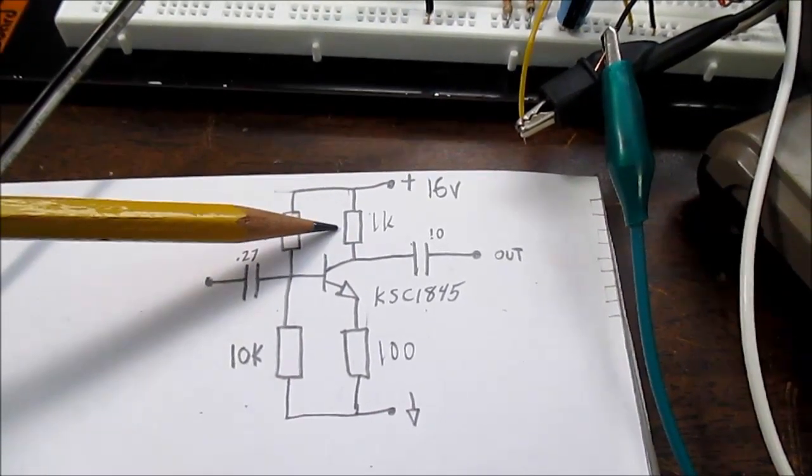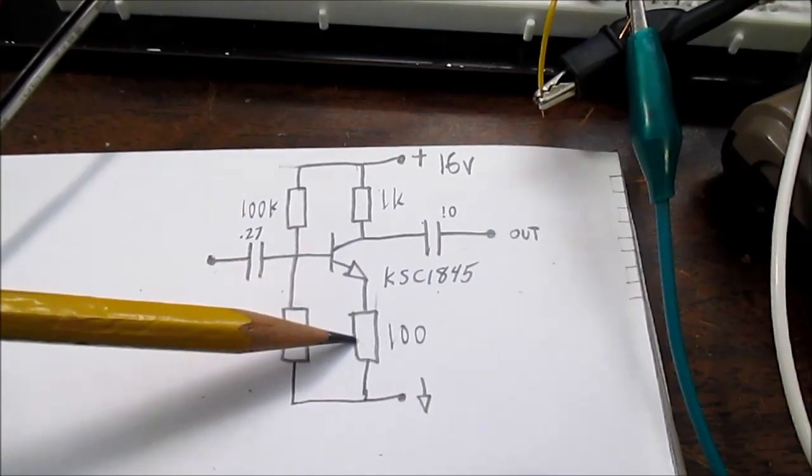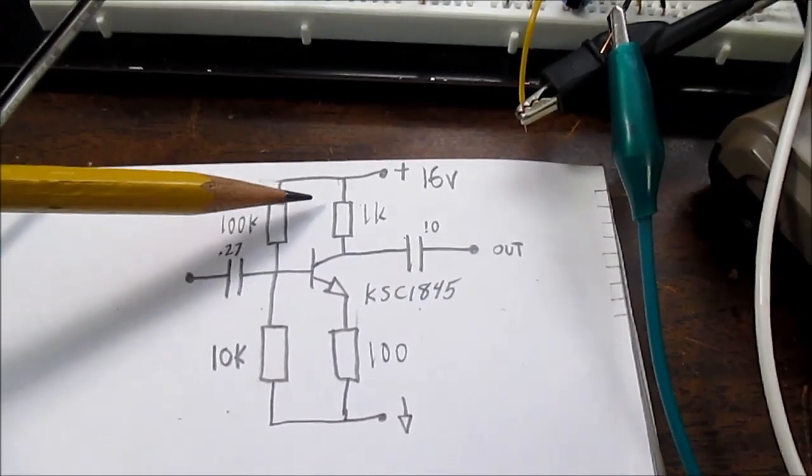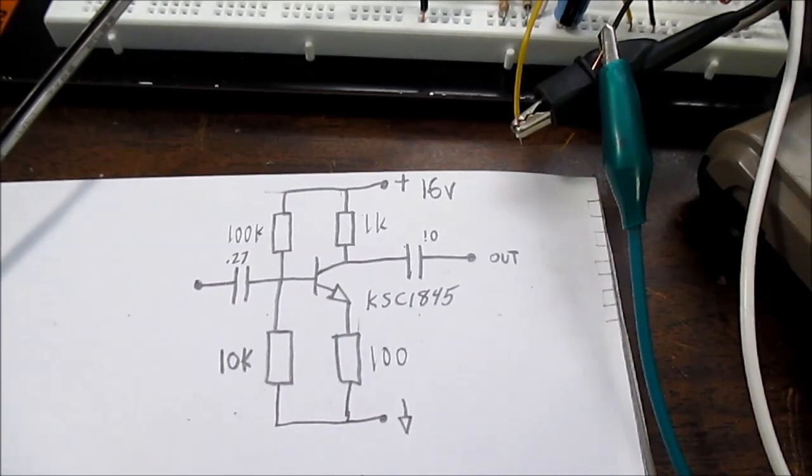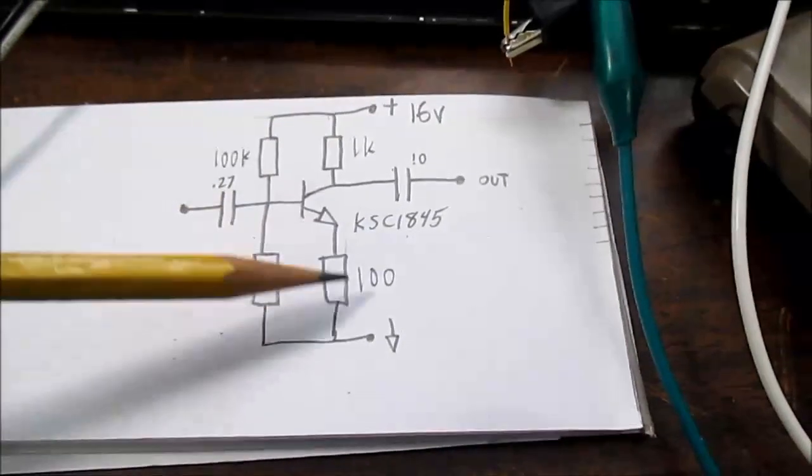And its quiescent current was, I forget, it was like 600 milliamps or something like that. So yeah, it had a lot more drive current for driving an 8 ohm load. But again, this circuit is just not going to do it.